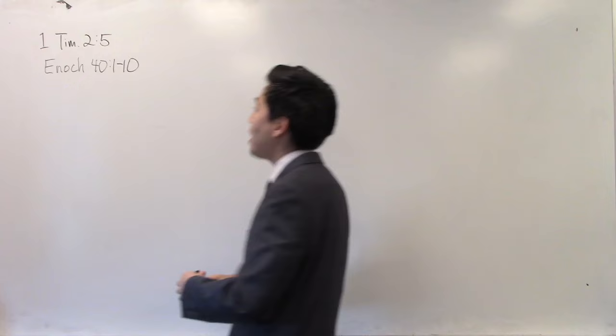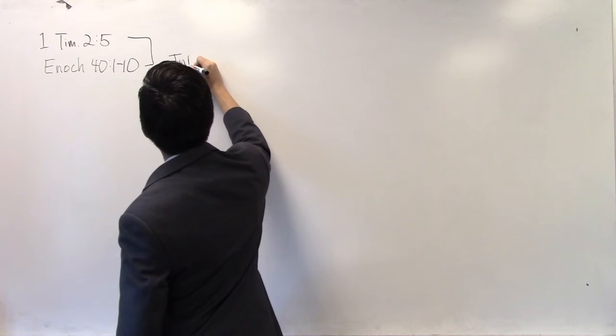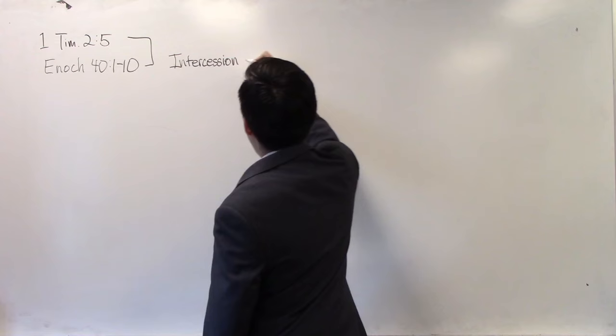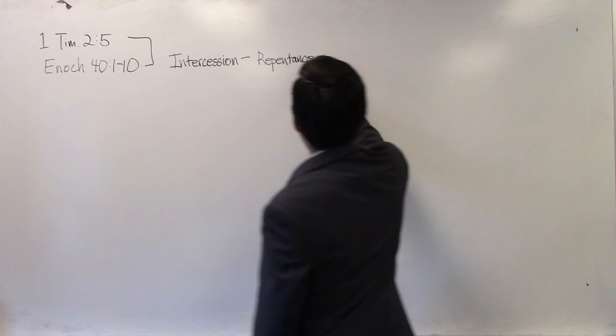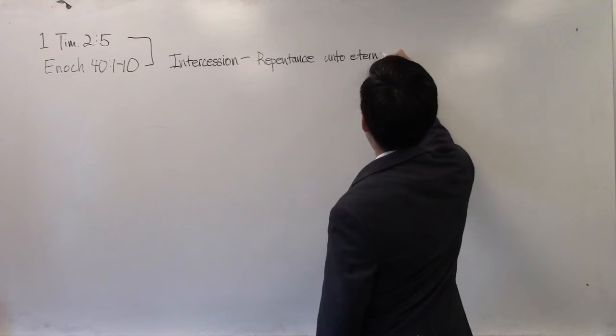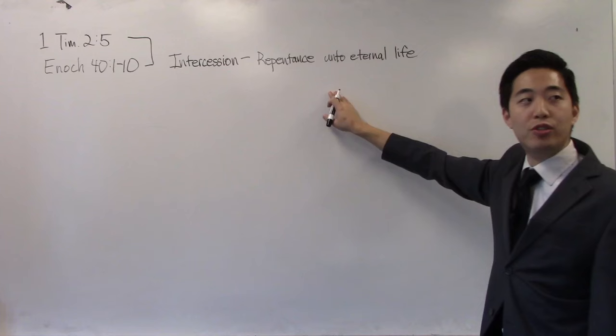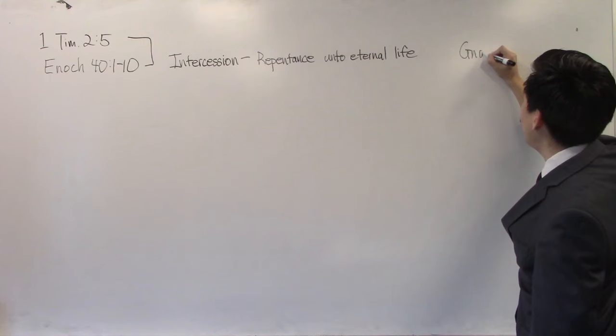It's very obvious right here that what they believe is that there are angels who do intercession, as well as angels who do the repentance unto eternal life. Now, if you study the Gnostics, you've got to realize this. And Paul even warned about this. He warned at the book of Colossians, there are those who put up a worshiping of angels, who sat on a pedestal, angels. He warned about them at Colossians. Because these Gnostics existed during the times of the early Christians.